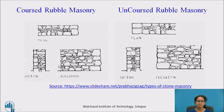In coursed rubble masonry, the plan, elevation of the courses, and section are shown. In this type, the stones are of different sizes, but the masonry work is carried out in courses. The stones used in the courses are of equal height. They are used in residential and commercial constructions.